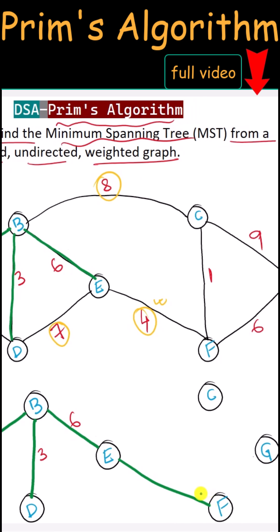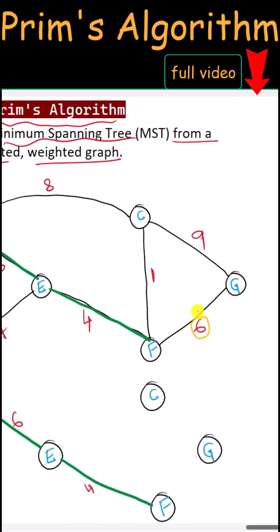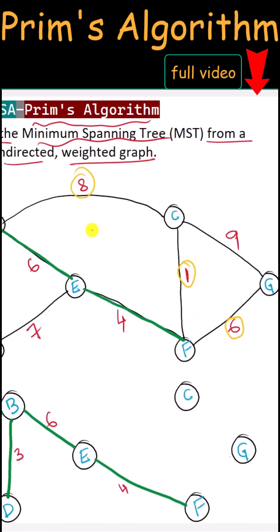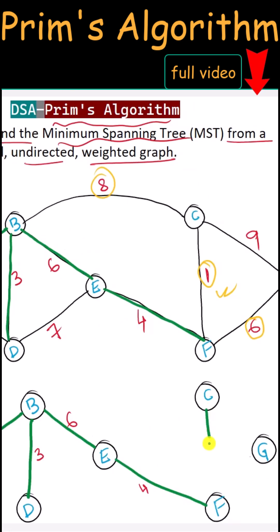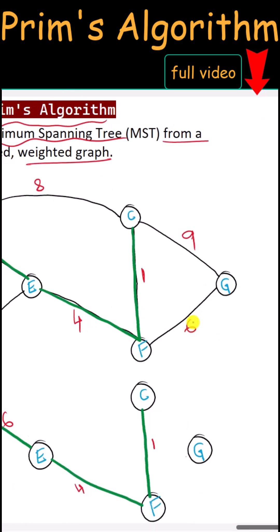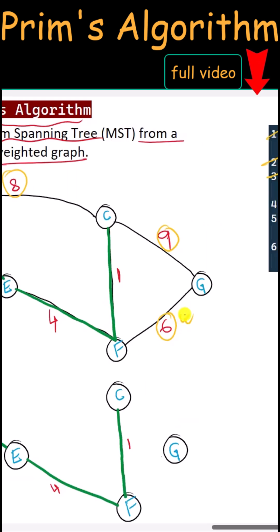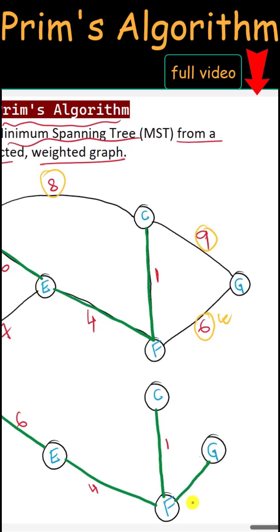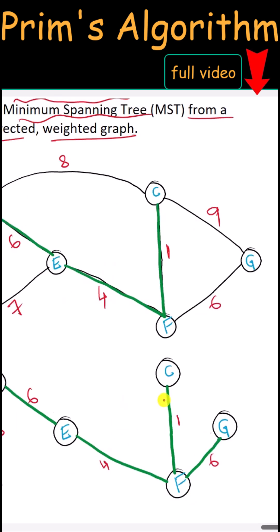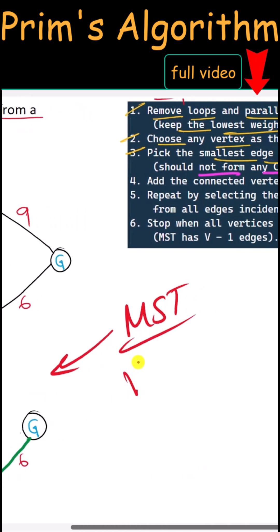Next, we compare between edges with weights six, one, and eight, and we take the edge with weight one — the smallest. Then we compare between six, nine, and eight, and take the edge with the smallest weight. This gives us our resultant minimum spanning tree.